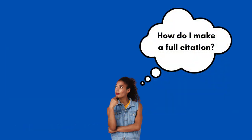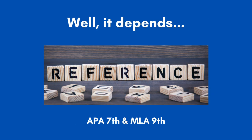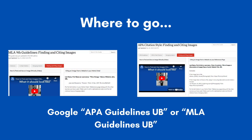So, how do you make a full citation? Well, it depends on the citation style. The two most common are APA 7th and MLA 9th. Each of them look pretty similar, but they have small differences. Lucky for you, the UB Libraries have two guides for each.